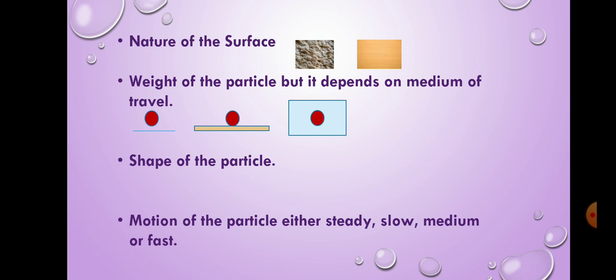The third one is shape of the particle. Here we have two examples. A box on a table and a ball on a table. Now tell me, which has more friction? Yes. A box has more. Because it has more area in contact with surface.